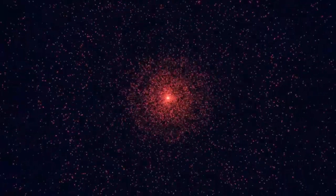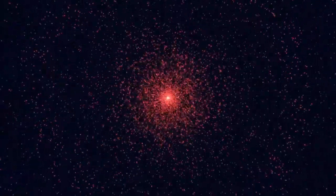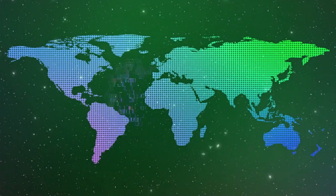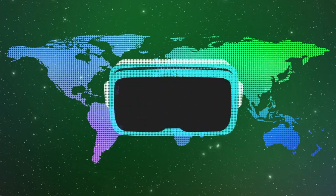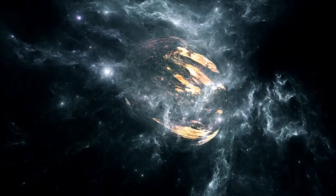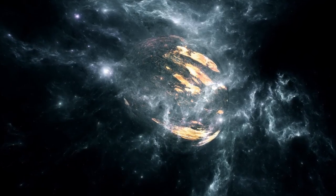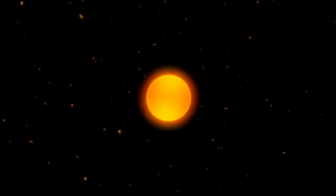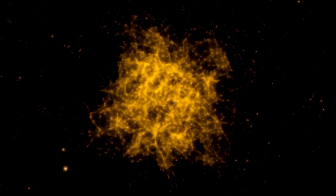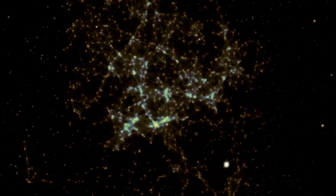This violent process, referred to as spaghettification, stretches matter into elongated filaments reminiscent of strands of pasta. The gravitational gradient is so intense that it rips apart the internal structure of the object, which is then absorbed into the singularity at the black hole's core.